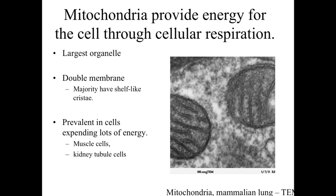Mitochondria have a double membrane structure and a relatively complicated internal organization. The membrane-bound regions include shelf-like cristae — flattened folds within the mitochondria. Mitochondria are very prevalent in cells requiring a lot of energy, like muscle cells and kidney tubule cells.